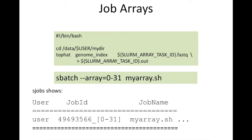Each of the subjobs is assigned an array index, going from 0 to 31 in this case. When the batch system starts up each subjob on the allocated resources, the environment variable $SLURM_ARRAY_TASK_ID is set to the index for that subjob. So when the first subjob runs — subjob 0 — the command would be TopHat, genomeindex, 0.fastq, writing to an output file called 0.out. The second subjob would run TopHat, genomeindex, 1.fastq, writing to a file called 1.out.